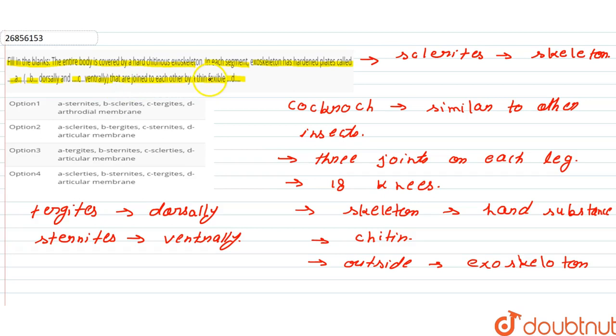thin and flexible articular membrane. The articular membrane is thin and flexible.